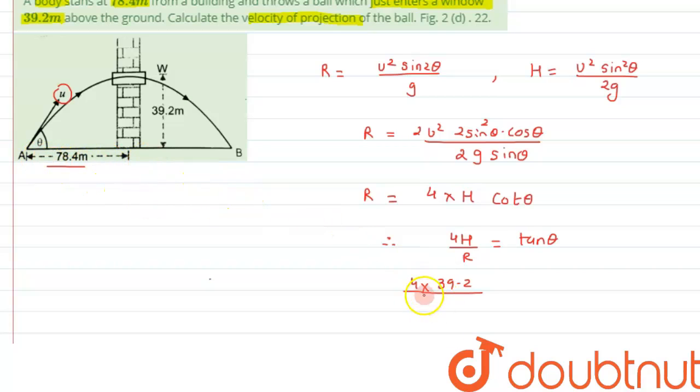For range we can see half of the range has been given as 78.4, so half will be the same. So we can write it as 2 times 78.4, and that would equal tan theta. Therefore from here we can see...